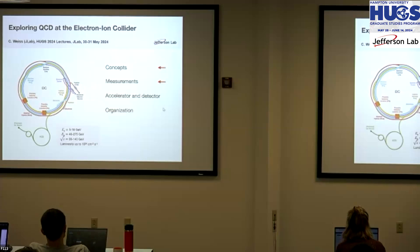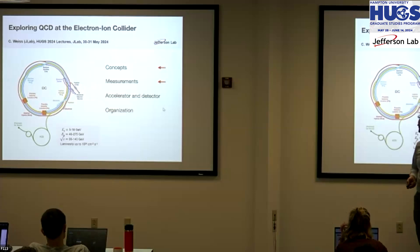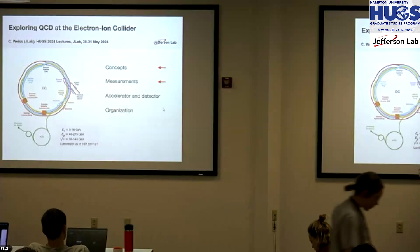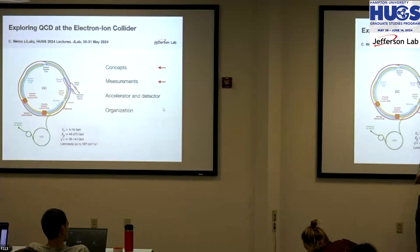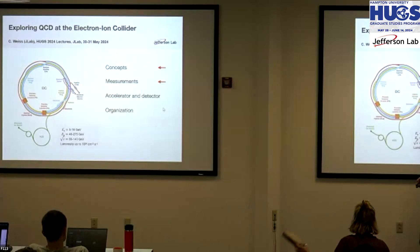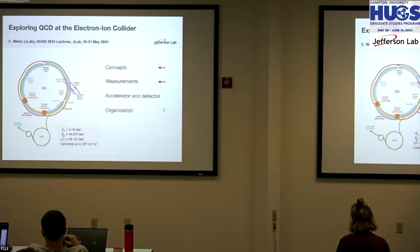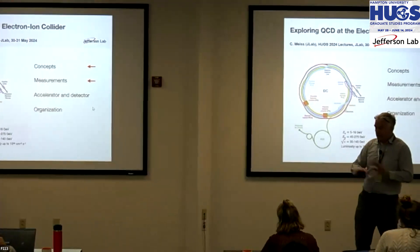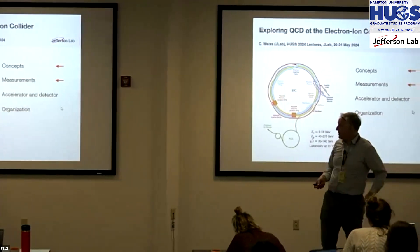Our topic today this morning and tomorrow afternoon is QCD at the Electron Ion Collider. As you probably know, the U.S. nuclear physics community and the Department of Energy have decided to construct a next-generation facility for high-energy electron-proton and electron-nucleus scattering in the form of a colliding beam facility with center-of-mass energies in the range of 30 up to 140 GeV. This new facility will enable a very extensive science program.